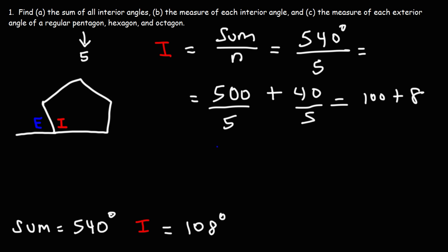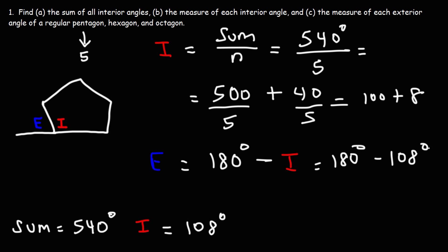Now let's calculate the exterior angle. Because the interior and the exterior angles are supplementary, they add up to 180. So the exterior angle is simply 180 minus the interior angle: 180 minus 108 gives us 72 degrees.